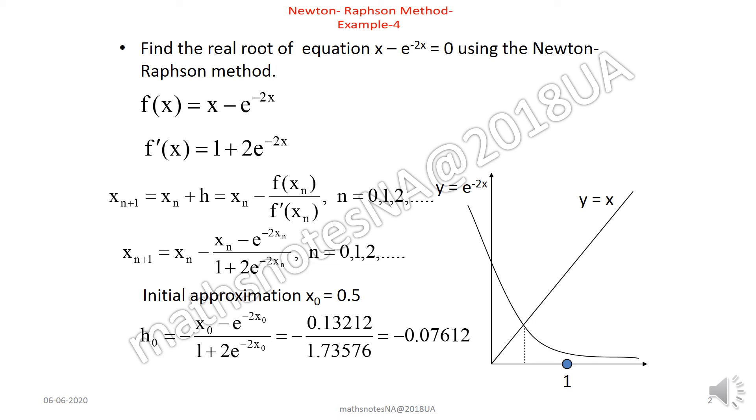And this term we write with minus sign which we can denote as h₀. Calculate this term. So our root x₁ will be 0.5 minus h₀. So x₁ is 0.5 minus h₀ is this value, and this comes to 0.42388.